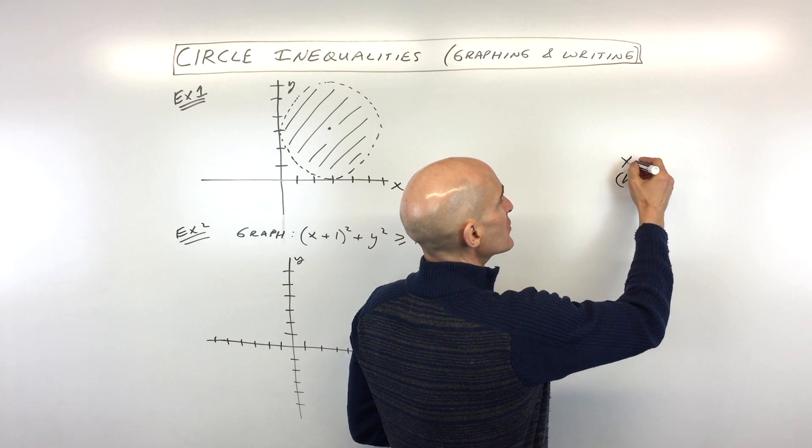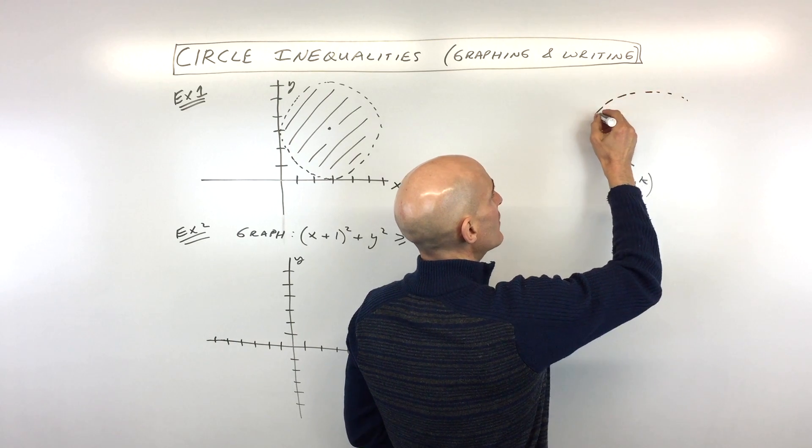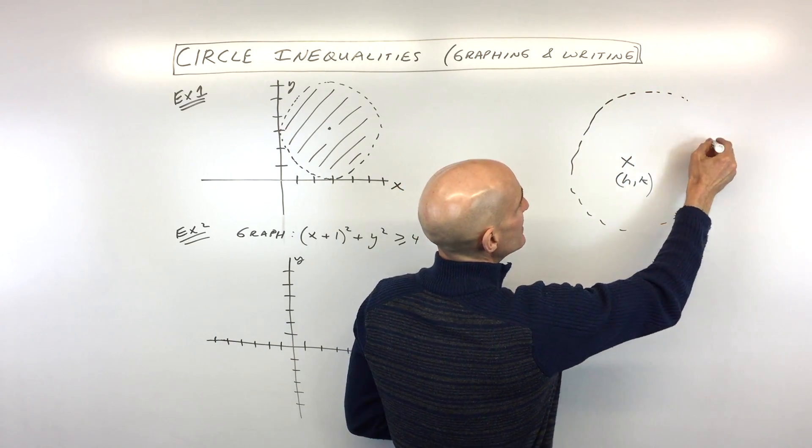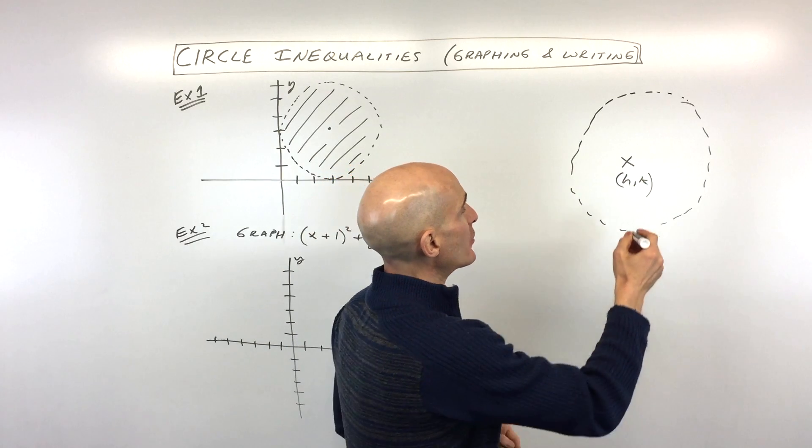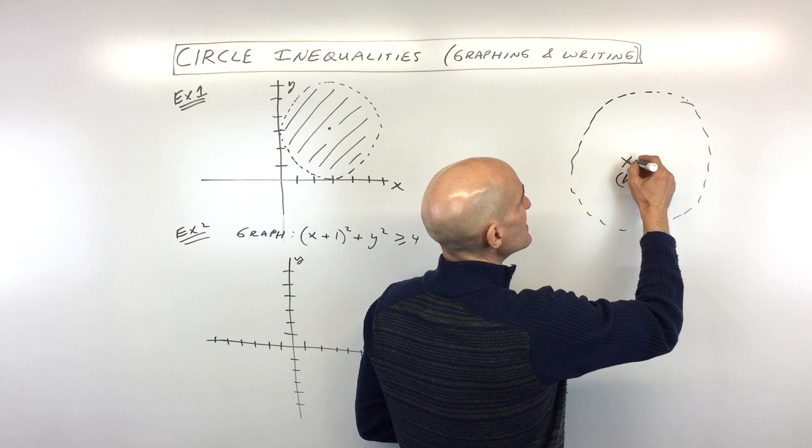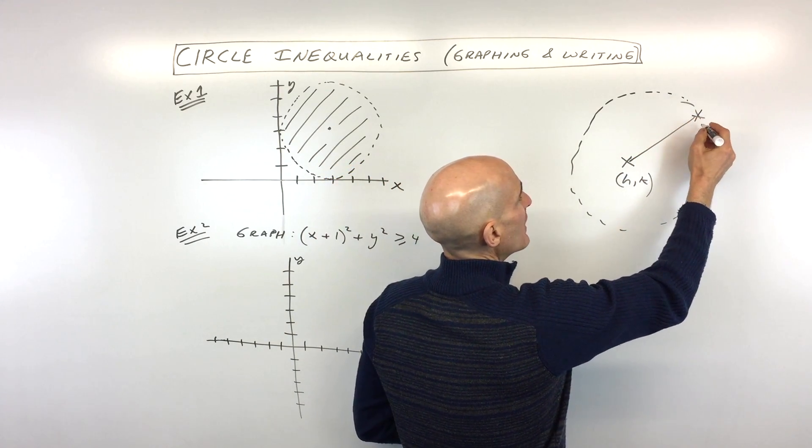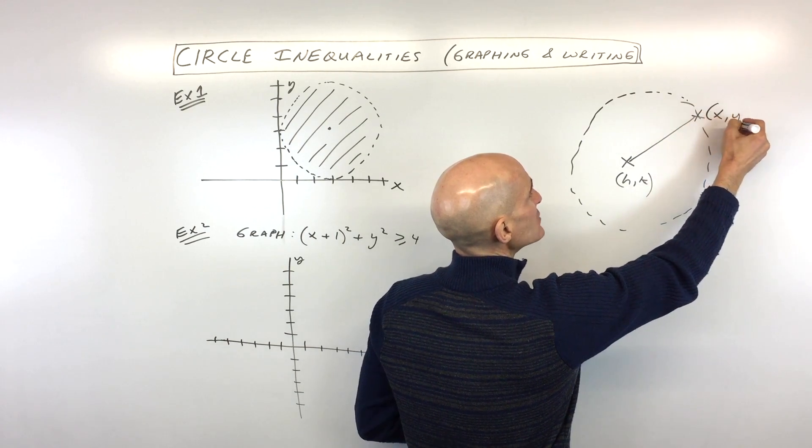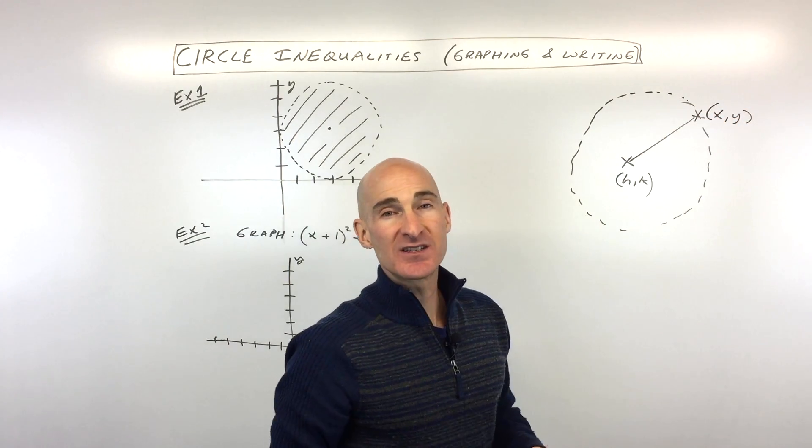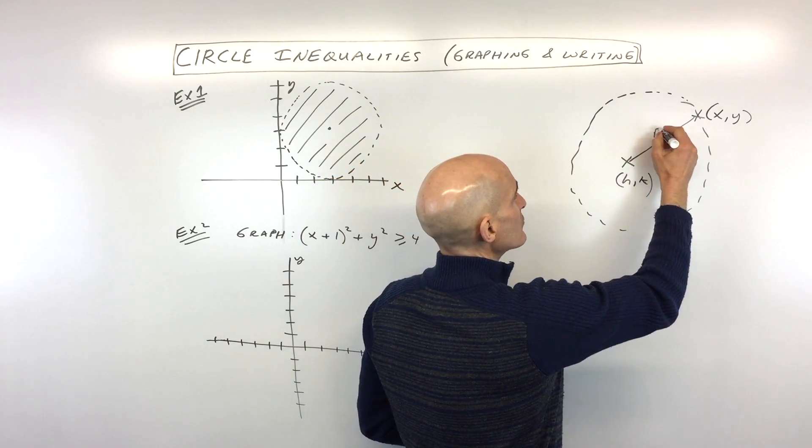And then what you're doing is a circle is really the set of points that are equidistant from a given point, that given point called the center. So when you measure the distance from that center to any point on the circle, let's just call that point xy, it's a fixed distance away. And that distance we call the radius.